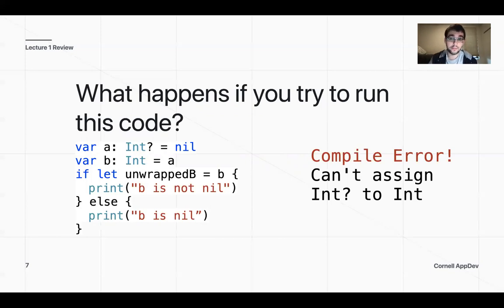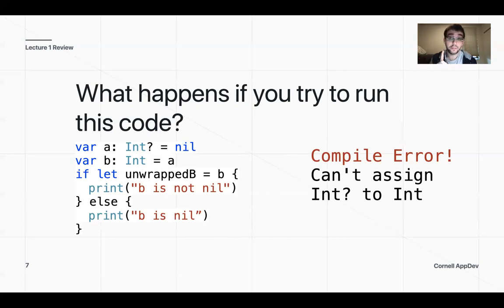This will be important when we start doing UIKit, because if you look through the documentation, you'll see there are many optional values. For example, if we want to set the text of something, there could be text or there might not be text. You can always set strings equal to that text attribute because you can do that with optionals, but not the other way around.